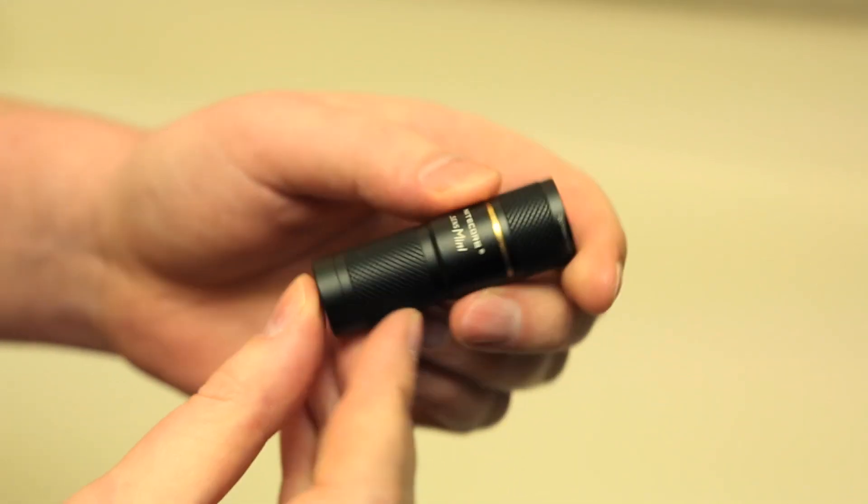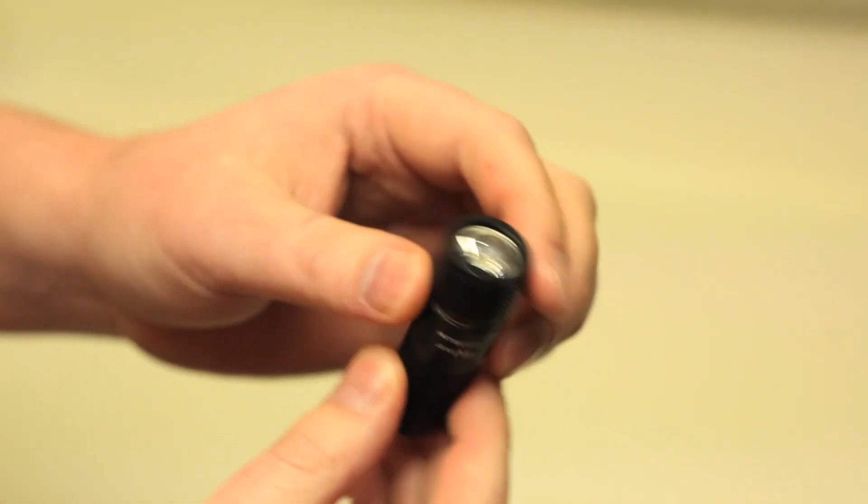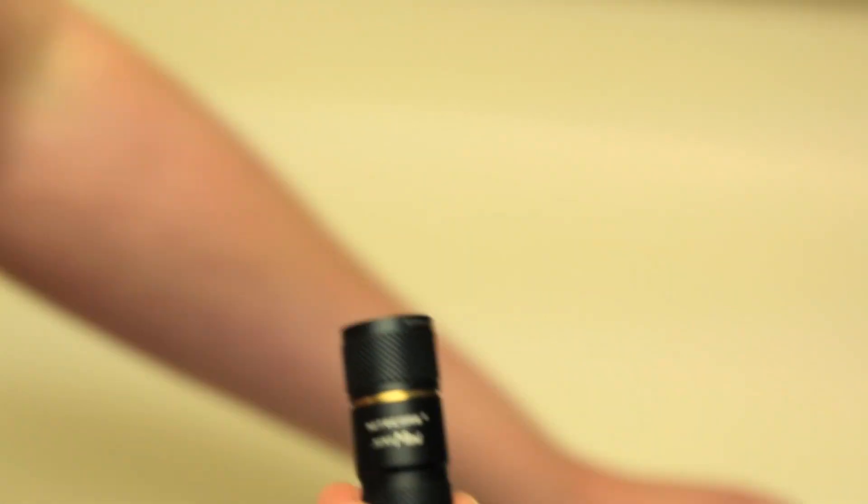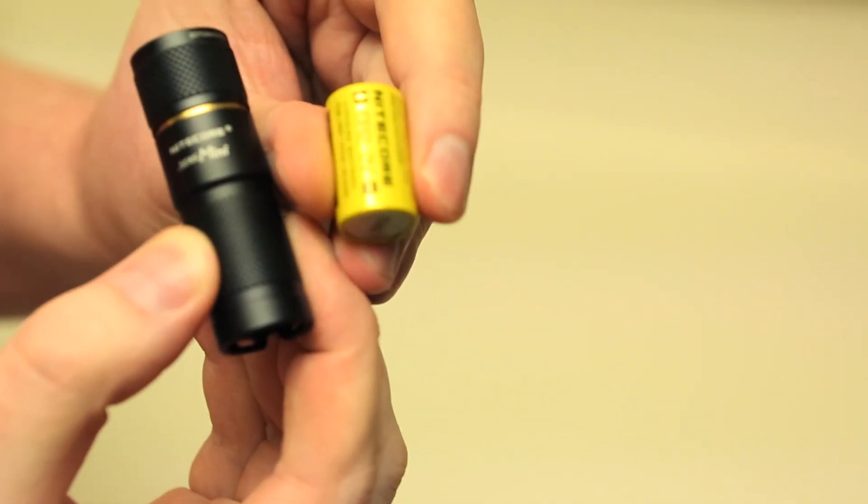Alright, this little guy, the Nightcore Sense Mini. See how tiny that is? You get 170 lumens out of this thing, off one CR2.